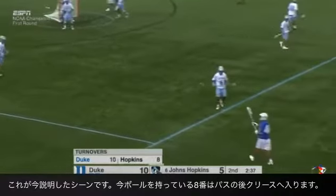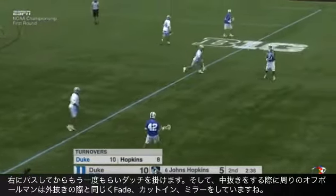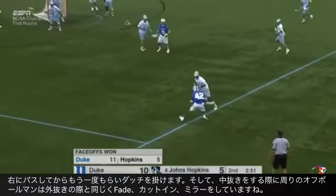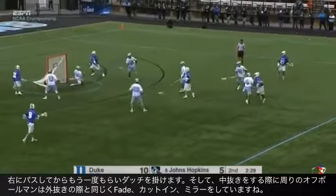So here they're setting it up. This player will pass it and go to the crease. Now redirect right back. Now as he takes his dodge notice that we're getting a fade, cut the middle, and a mirror.